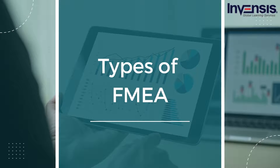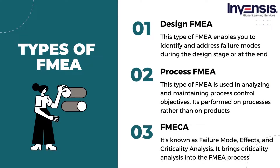There are several FMEA types. All these types focus on detecting failure modes early on and eliminating them. The first type is design FMEA. This type enables you to identify and address failure modes during the design stage or at the end, by breaking down the design into several components and analyzing the potential failure modes. The second is process FMEA, which is used in analyzing and maintaining process control objectives. As the name suggests, it's performed on processes rather than on products, and you break down the process into various components.